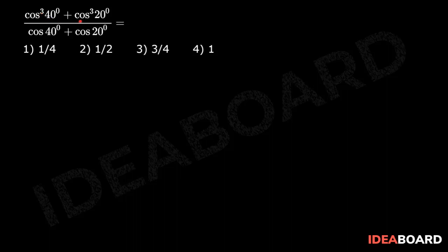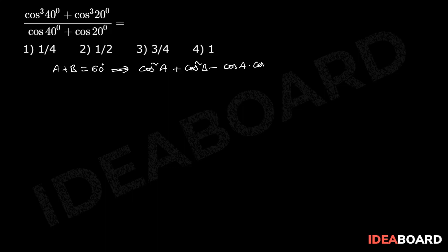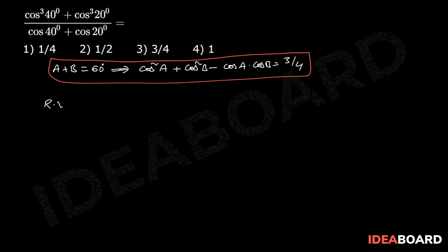Cos cube 40 degrees plus cos cube 20 degrees divided by cos 40 plus cos 20 — find the value. We know that A plus B equals 60 degrees, and the identity: cos square A plus cos square B minus cos A into cos B equals 3 by 4.